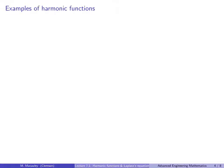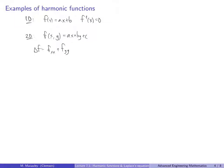Let's look at examples of harmonic functions. In one variable, they are just straight lines: f(x) = ax + b, because these are functions whose second derivative equals zero. In two variables, planes — f(x,y) = ax + by + c — are harmonic because both second partial derivatives are zero, giving f_xx + f_yy = 0 + 0 = 0. These are trivially harmonic — planes and lines are flat.